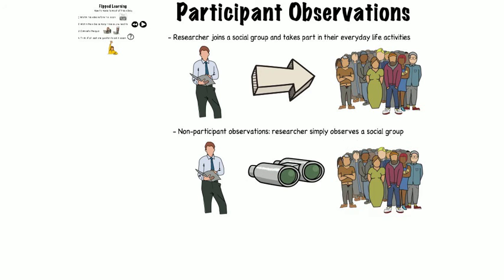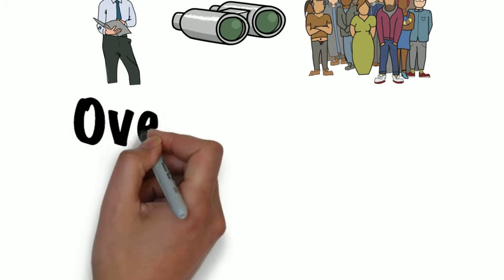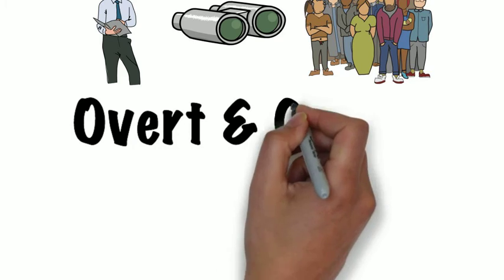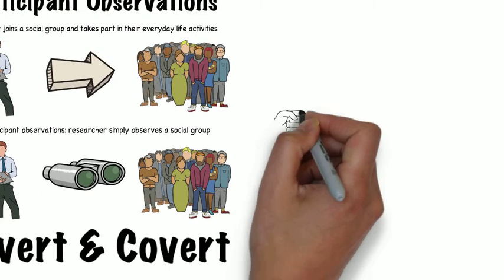There are also two different types of participant observations — overt and covert — but we will come back to these later on.